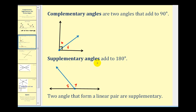Supplementary angles add to 180 degrees. So if the angles were adjacent as we see here, they would form a straight line, and therefore are also called a linear pair. Angle seven and angle eight are supplementary angles.